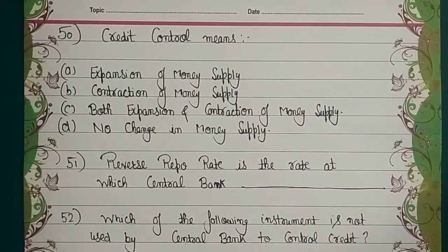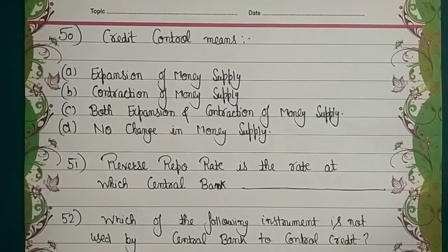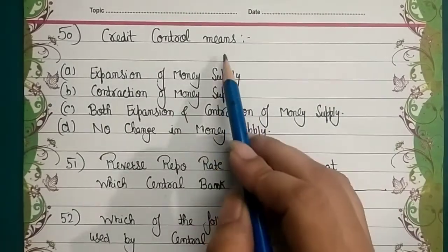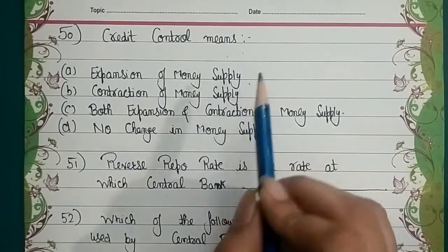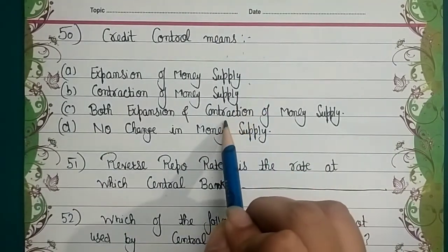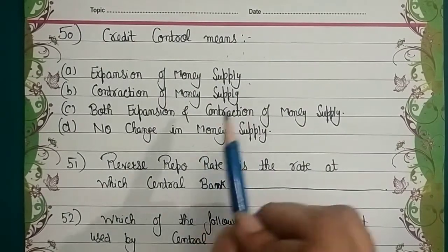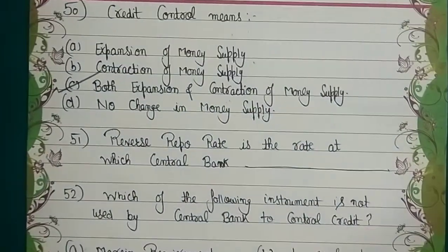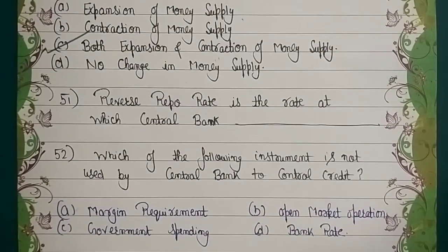We are approaching Question 50. In credit control, what RBI needs to do is expansion and contraction — sometimes money in the economy goes too high, so it contracts; sometimes too low, so it expands. RBI tries to keep money supply stable so it is neither too much nor too little.